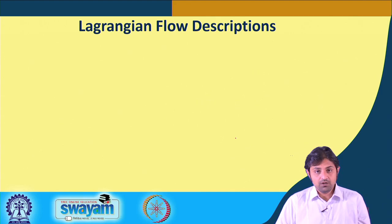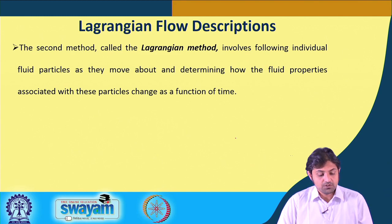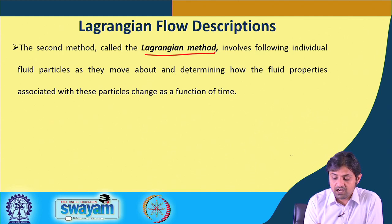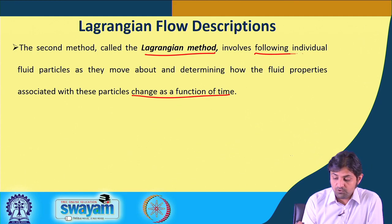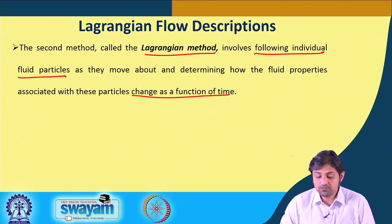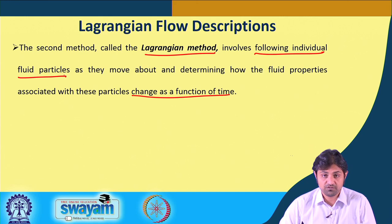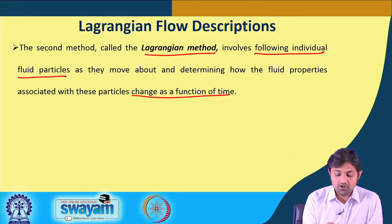The second method is called the Lagrangian method. It involves following individual fluid particles as they move and determining how fluid properties associated with these particles change as a function of time. Our frame of reference is fixed to one of the moving particles, meaning it could be a non-inertial frame of reference. The frame of reference x, y, z is at the particle itself.